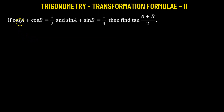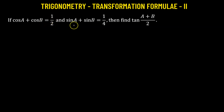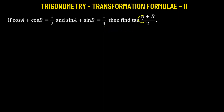We are given that the sum of two cosine functions, cosine of a plus cosine of b, equals one half, and the sum of two sine functions, sine of a plus sine of b, equals one quarter. We need to find the value of tangent of angle (a plus b) over two. Let us begin.